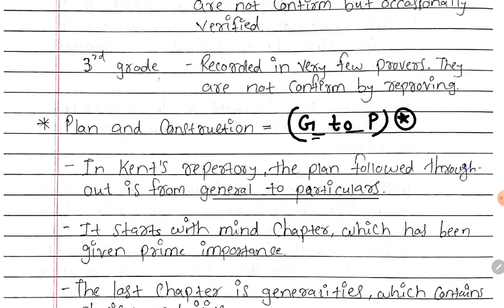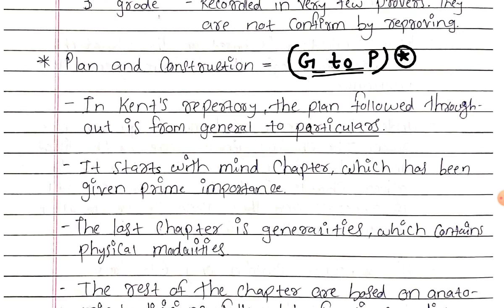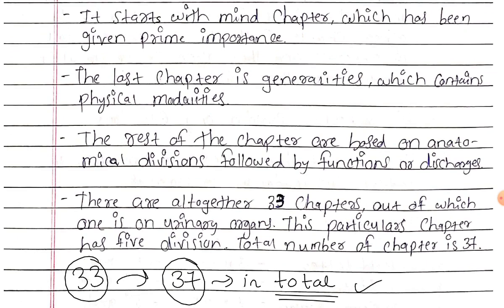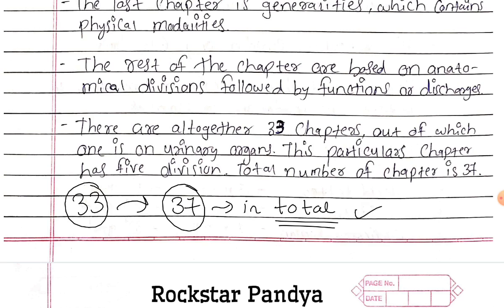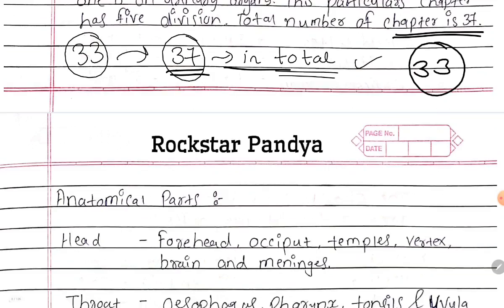Plan and construction: In Kent's Repertory the plan followed throughout is from generals to particulars (G2P). It starts with the Mind chapter, which has been given prime importance. The last chapter is Generalities, which contains physical modalities. The rest of the chapters are based on anatomical divisions followed by functions or discharges. There are altogether 33 chapters, out of which the one on urinary organs is subdivided into five divisions, making the total number of chapters 37.